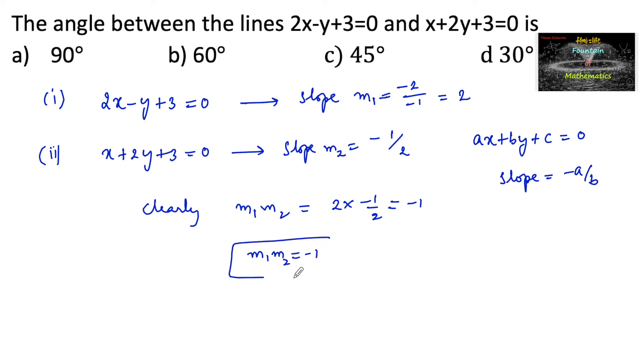Hence we can say that the lines 1 and 2 are perpendicular, and hence the angle between them is 90 degrees. So it is our option a.